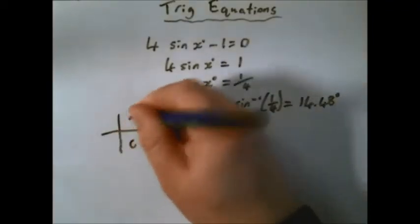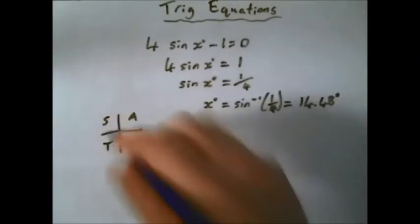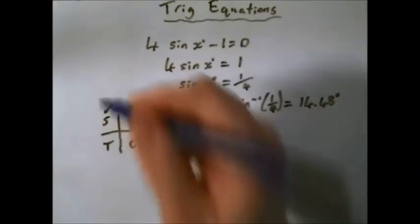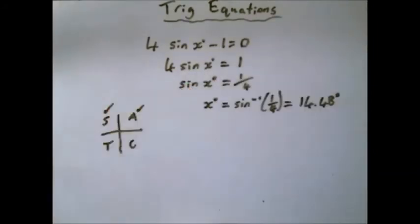Okay, so remember, we're ticking the quadrants where sin is positive, so it's this one and that one. Now remember, in here, to find the angle, it's 180 minus whatever you've got for your first answer.